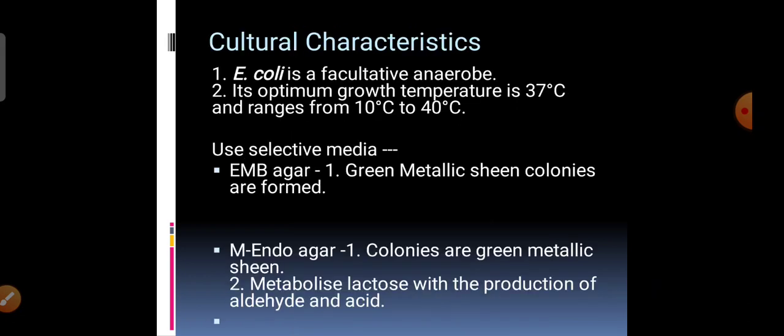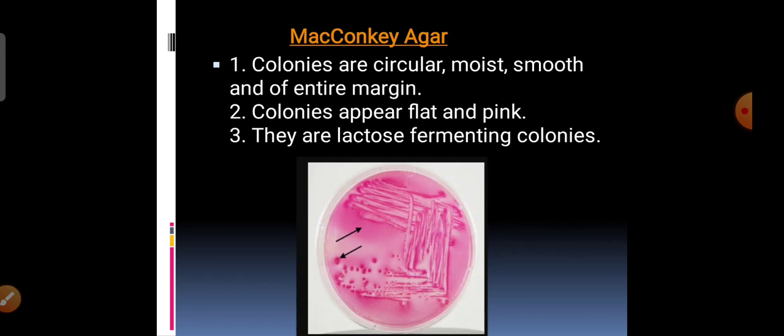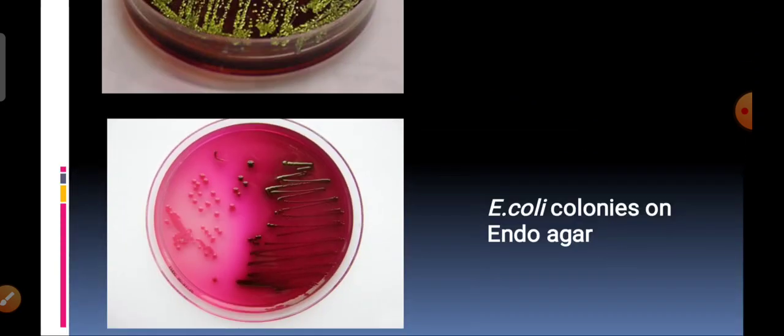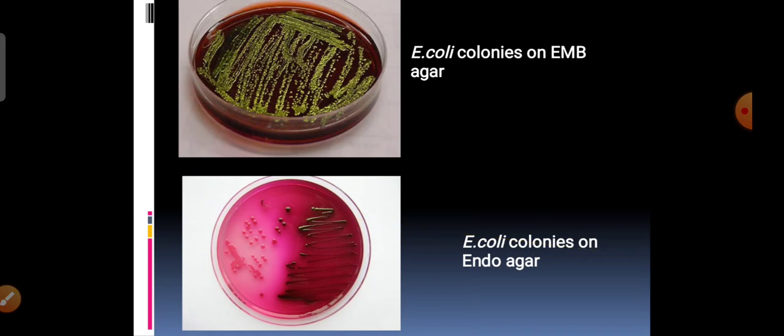We also choose EMB agar or Endo agar as selective media. When the organism is inoculated on eosin-methylene blue agar, E. coli produces dark purple centered colonies with green metallic sheen. Sometimes the green metallic sheen may not form, but black-nucleated colonies are produced. On Endo agar, E. coli produces colonies with a golden metallic sheen — dark purple colonies with golden metallic sheen — because the organism metabolizes lactose and produces aldehyde and acid.